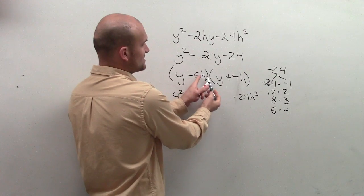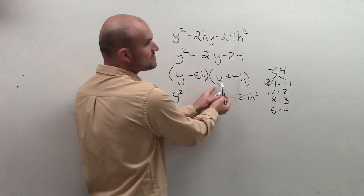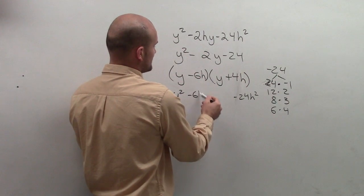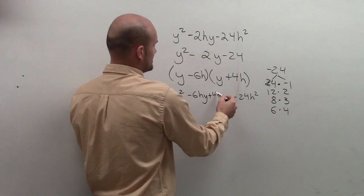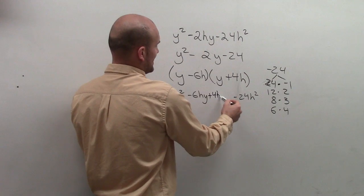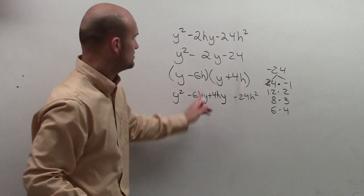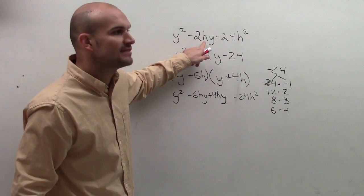And let's check the middle terms. Negative 6h times y is negative 6hy, and 4h times y is positive 4hy. Then do those combine to negative 2hy? Yes.